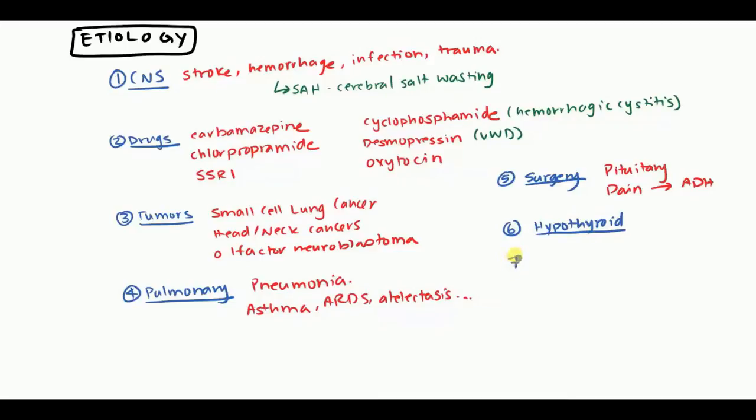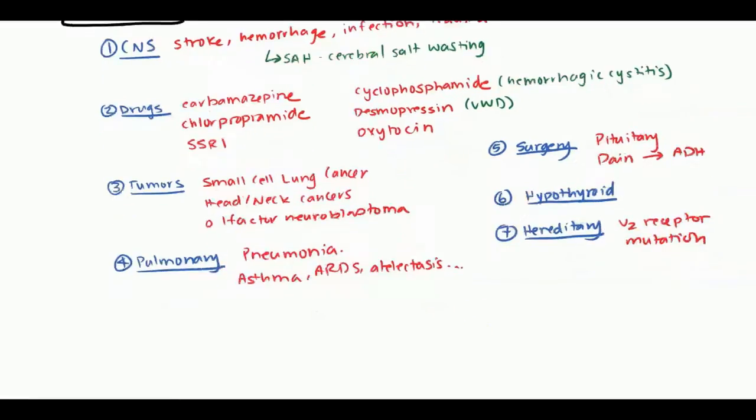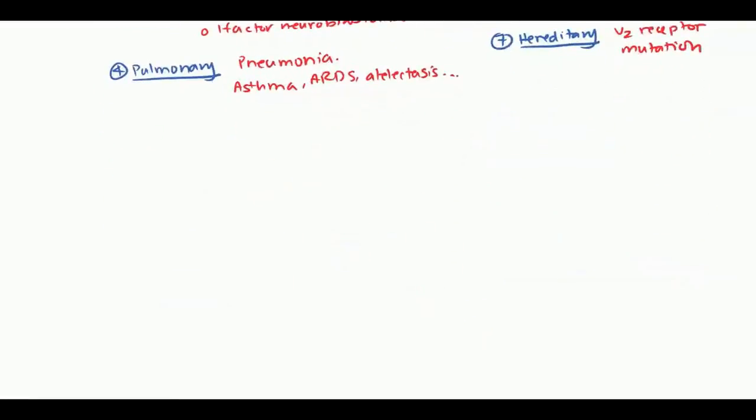And finally, there are some hereditary conditions. Primarily the one I've read about was the V2 receptor mutation. So pretty much the V2 receptor without stimulation is becoming stimulated, and that's going to lead to this perception of SIADH. But again, this one, it's just going to be the symptoms of it.